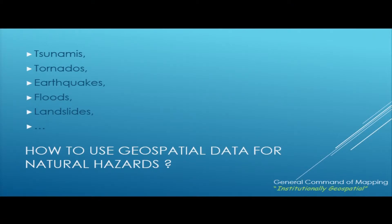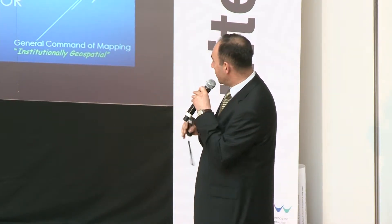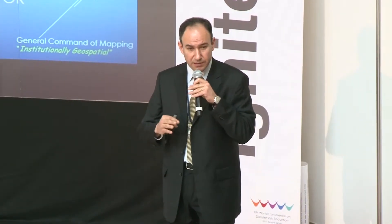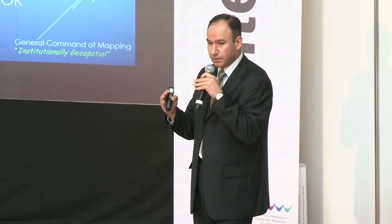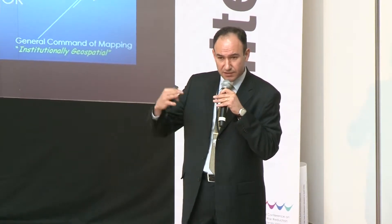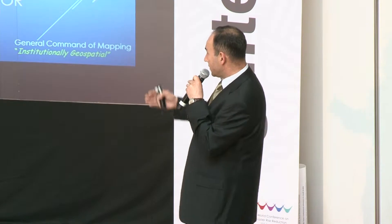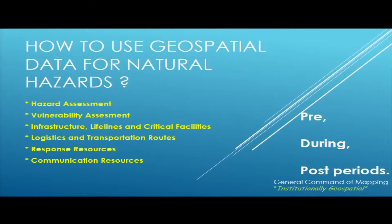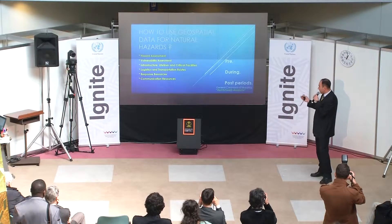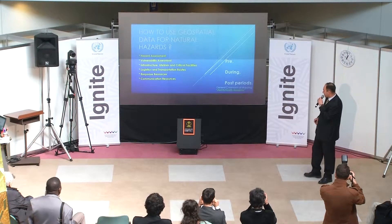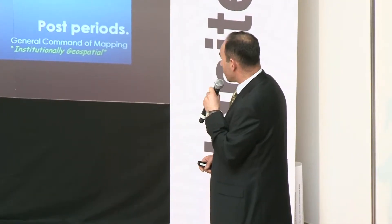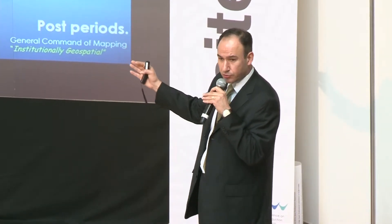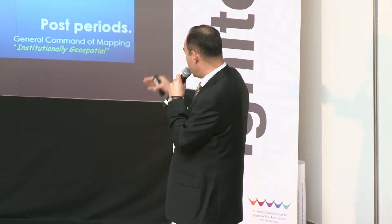Some disasters occur in an abrupt manner and affect large areas and large numbers of people, such as tsunamis, tornadoes, and earthquakes. On the other hand, some disasters occur in specifically limited areas, and we can take precautions before these events occur, such as floods and landslides. We can use geospatial data for hazard assessment, vulnerability assessment, infrastructures, lifelines, critical facilities, logistic and transportation routes, response resources, and communication resources. This can be divided into three phases: pre-disaster, during disaster, and post-disaster periods.